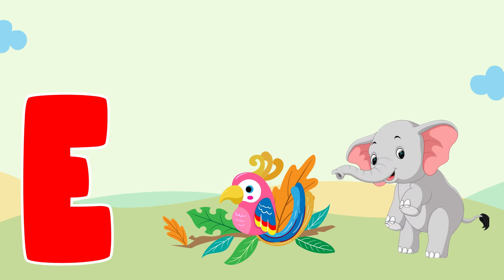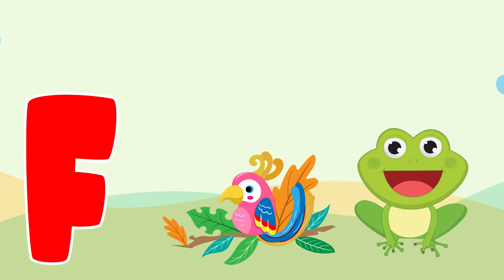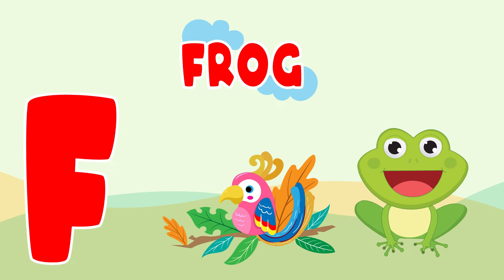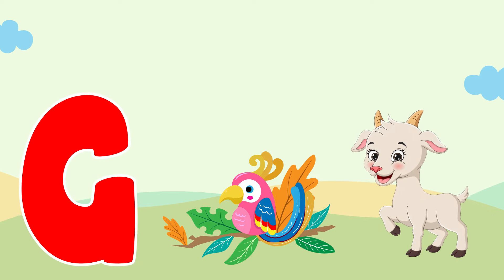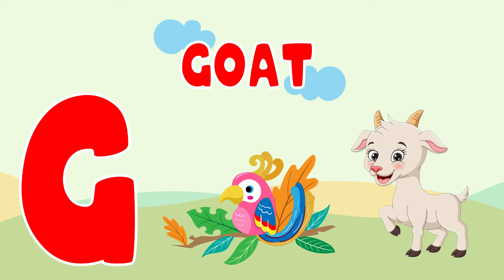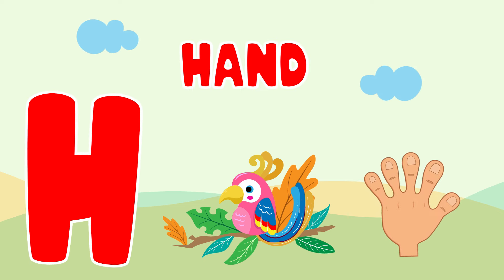E is for elephant, e-e-elephant. F is for frog, f-f-frog. G is for goat, g-g-goat. H is for hand, h-h-hand.